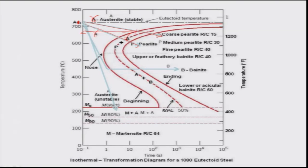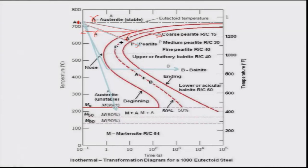If you cool fast enough and bypass the nose of the 1% transformation beginning curve, pearlite transformation will not take place. You have cooled fast enough that diffusional transformation will not happen, and then it will simply hit the MS start line and martensite transformation will happen. The cooling rate line that just touches the nose of the beginning curve is what is known as the Critical Cooling Rate (CCR) — this is the minimum cooling rate required to bypass pearlite transformation. You need a cooling rate higher than this to form martensite.